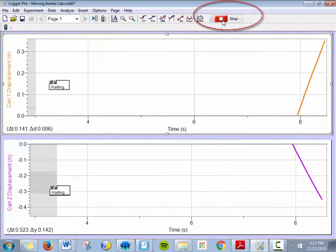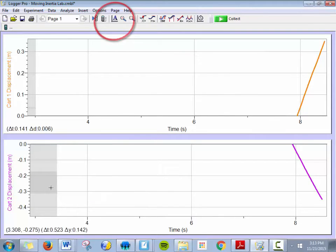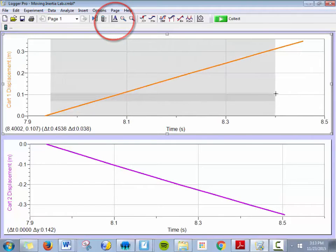To collect your data, simply click on the green button in the upper right-hand corner that says collect. Your data will look something like this. You'll need to scale it so you can get a better view of it. Take notice what you're actually collecting here is displacement versus time and we want to find the slope of this line.